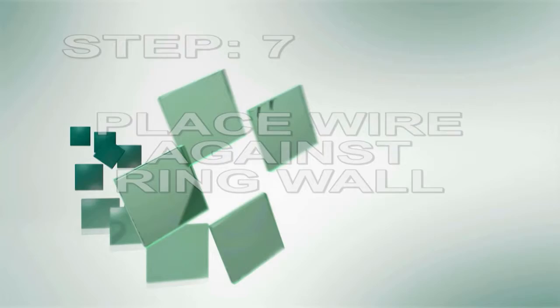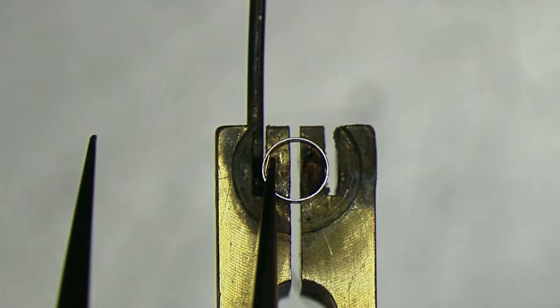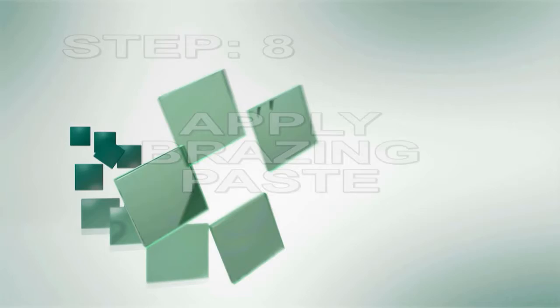Step 7. Place wire against ring wall. Ensure the stripped wire is snug against the ring wall so they are firmly touching. This will help create a strong connection.